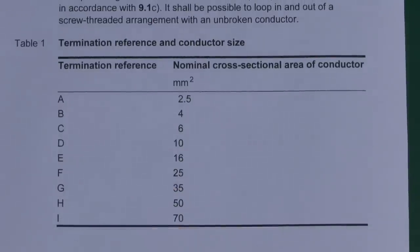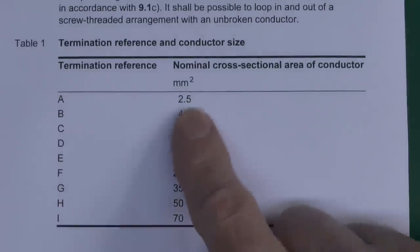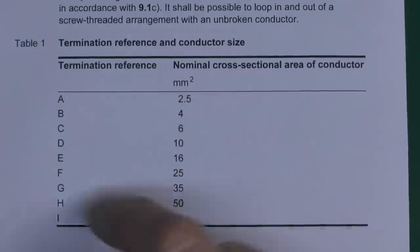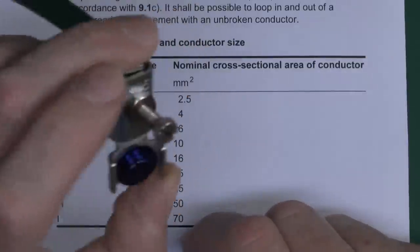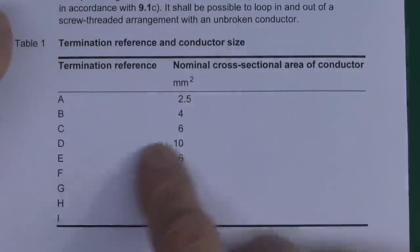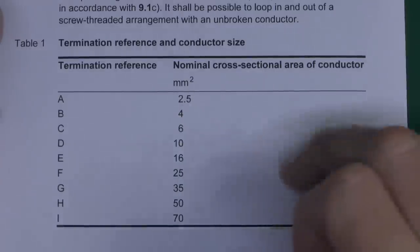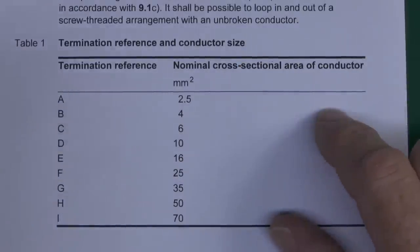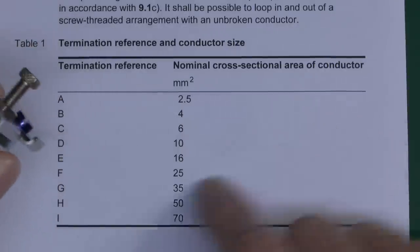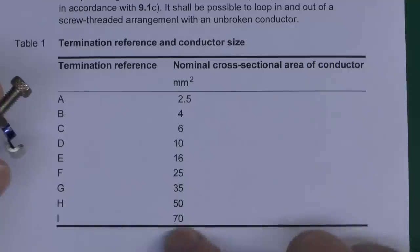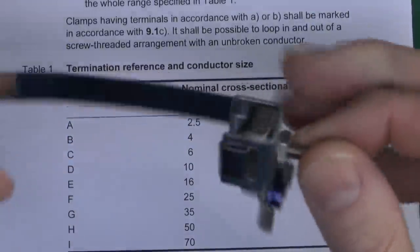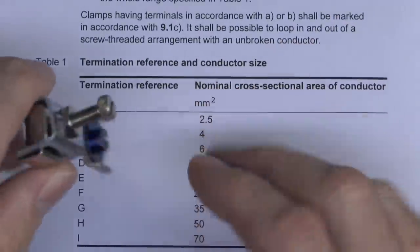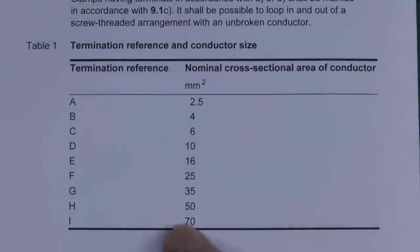Have a look in this table. This is actually from BS951. Now we can see that A, the smallest size, is 2.5 mm² conductors, and D is 10 mm² conductors. A to D is the most commonly available, because most bonding conductors tend to be around the 10 mm² size. Very important to note, if you've got one that says A to D, it is not suitable for things of 16 mm² and above. If you want to connect those, then you will need to buy one of these which are E, F and G, and so on. And of course those are available from the usual places. And it goes up to I, which will be a 70 mm² conductor.